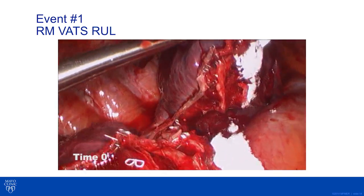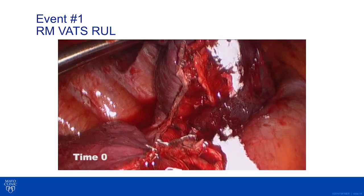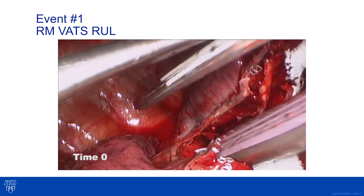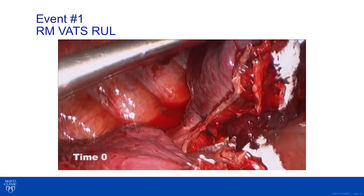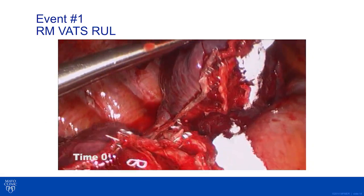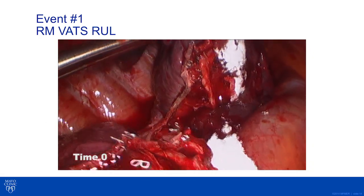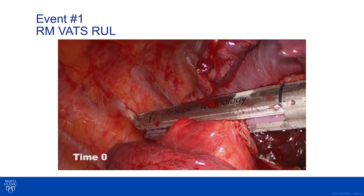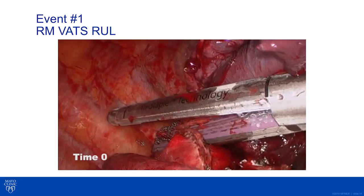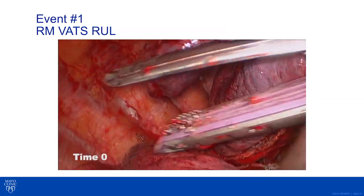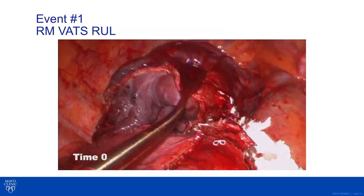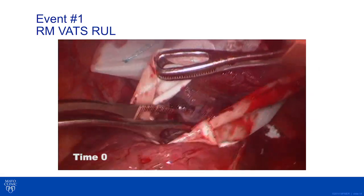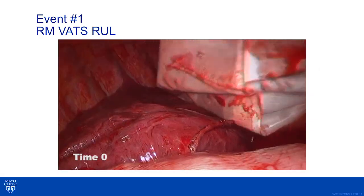We completed the stapled fissure of the right upper lobe, placed it into an endocatch bag, and removed it from the chest. During this entire time, we ensured there was no bleeding from the pulmonary artery. We set a clock to make sure enough time passed such that the team could safely confirm there was no residual bleeding in the pulmonary artery.